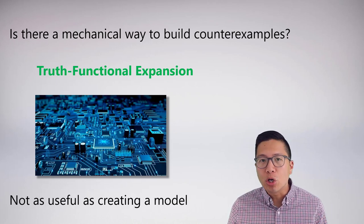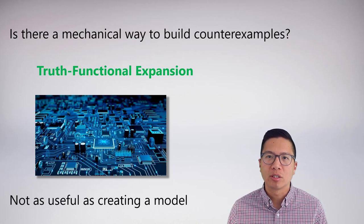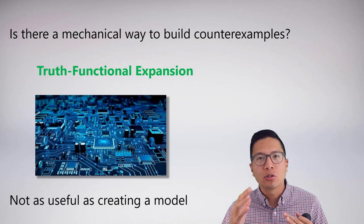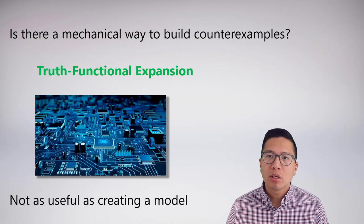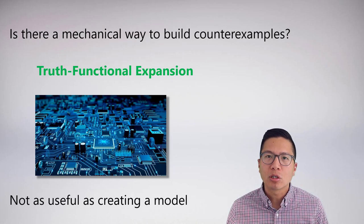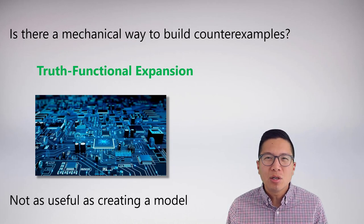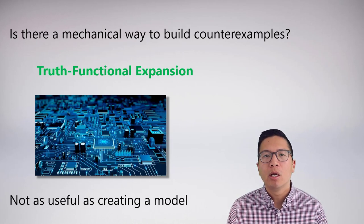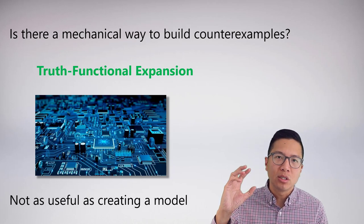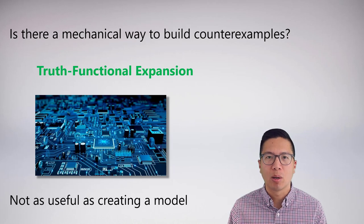Even though abstract translation really does the job for us, there is a more mechanical way to build a counter-example that doesn't rely on interpreting abstract language — it's called truth-functional expansion. Truth-functional expansion is powerful and useful in many ways, but it has large limitations for creating models. In the next lecture video, we will learn how to do truth-functional expansions and eventually use that skill to mechanically build finite abstract models that demonstrate semantic properties.